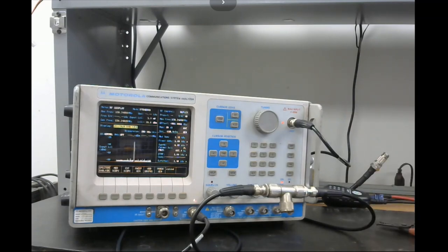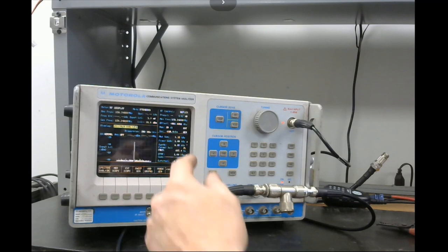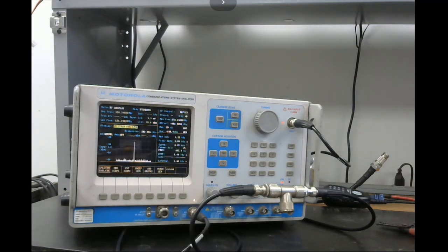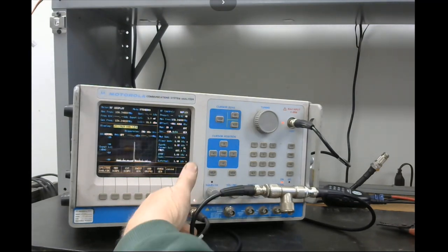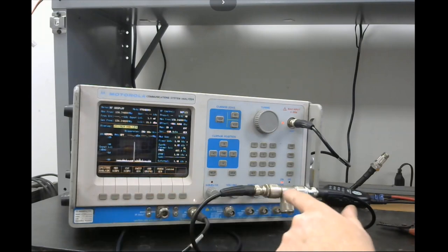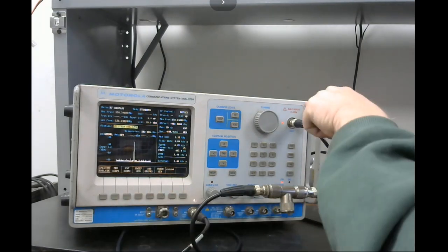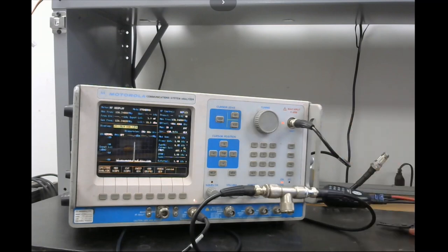We're going to start off here with just the most simple setup on our service monitor. We're in duplex generate mode with no offset, and we're going to be generating out of our gen port going straight through a T connector here into our antenna.